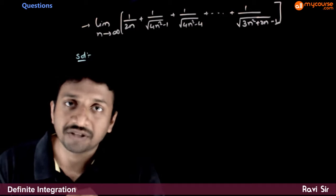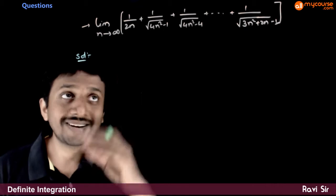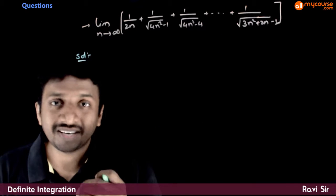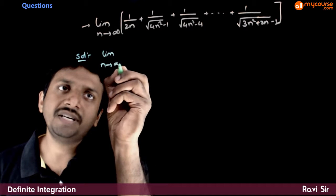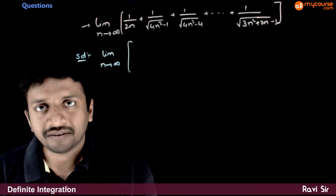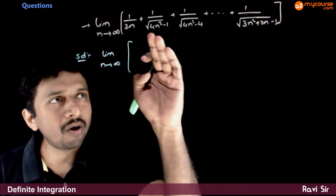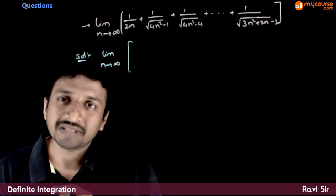First let us try to understand the summation. Let us try to express the summation in terms of sigma. This is limit n tends to infinity. To find the pattern here, try to write all these terms in a similar pattern.